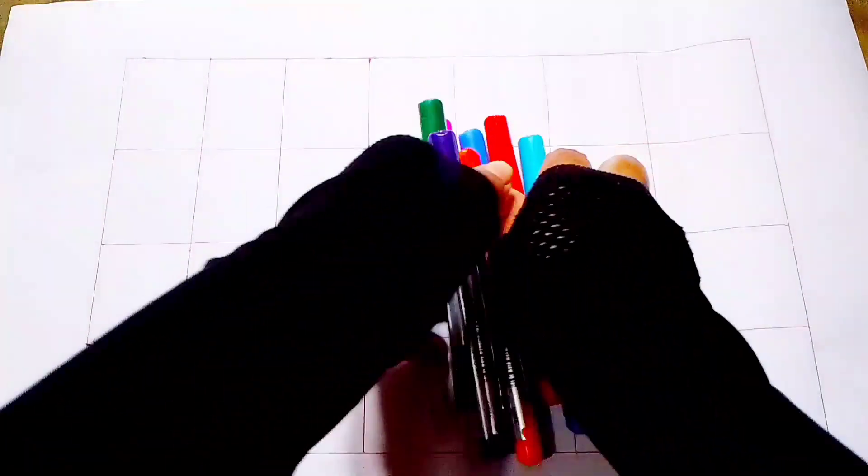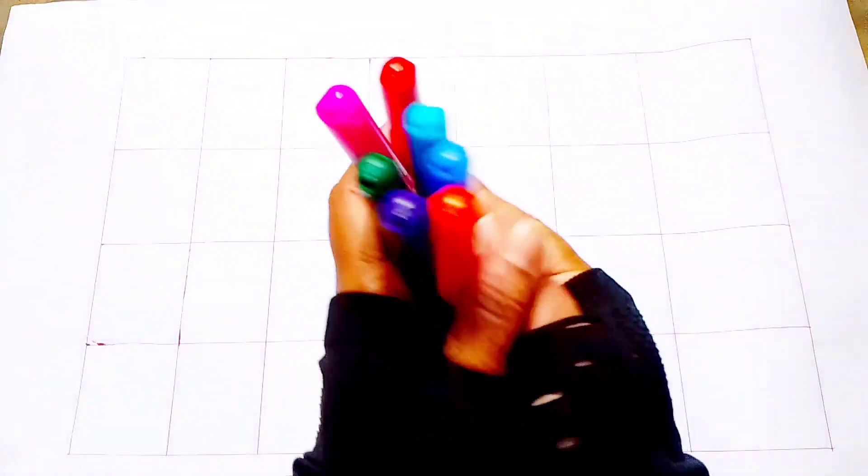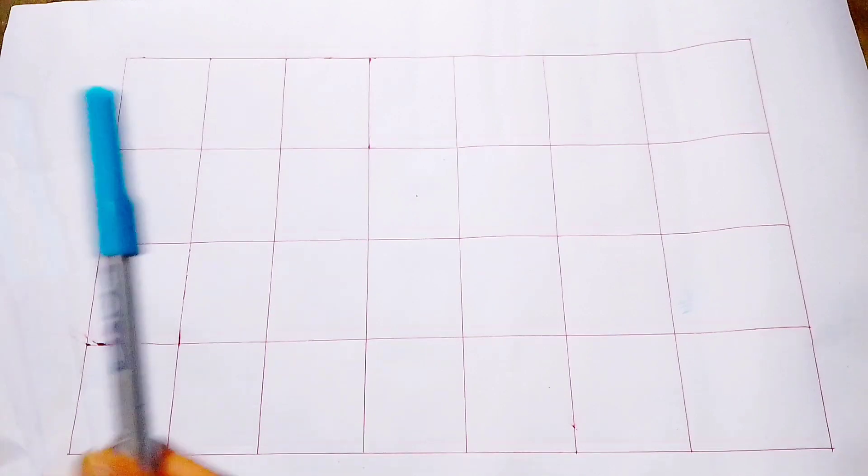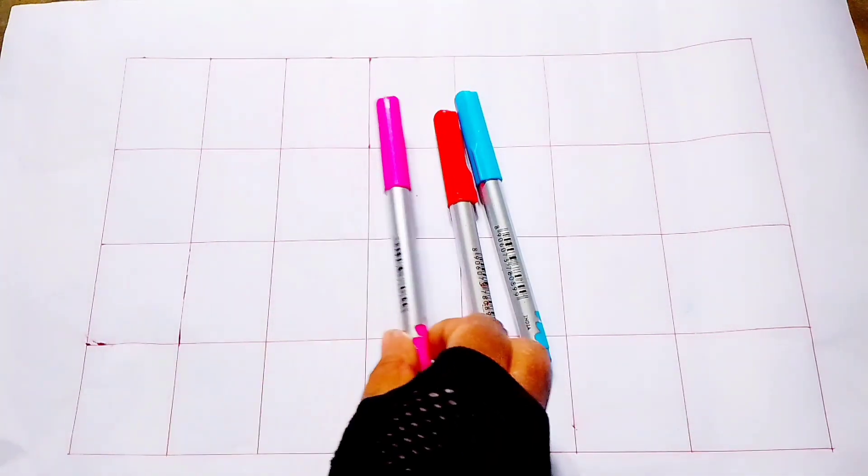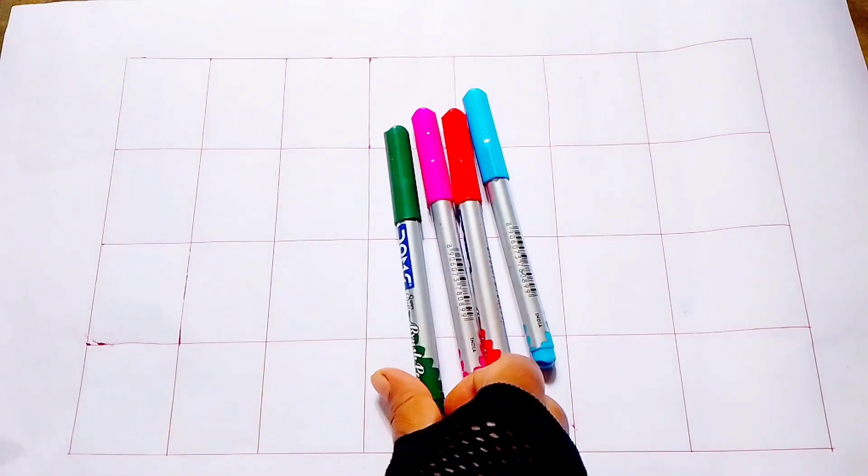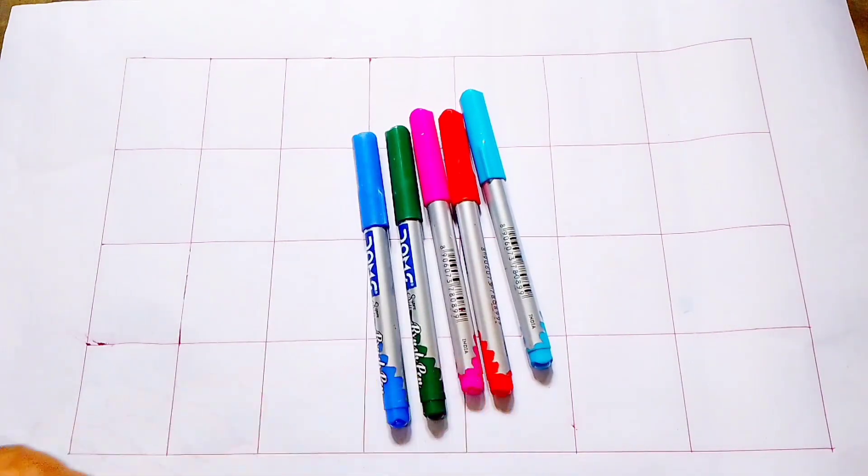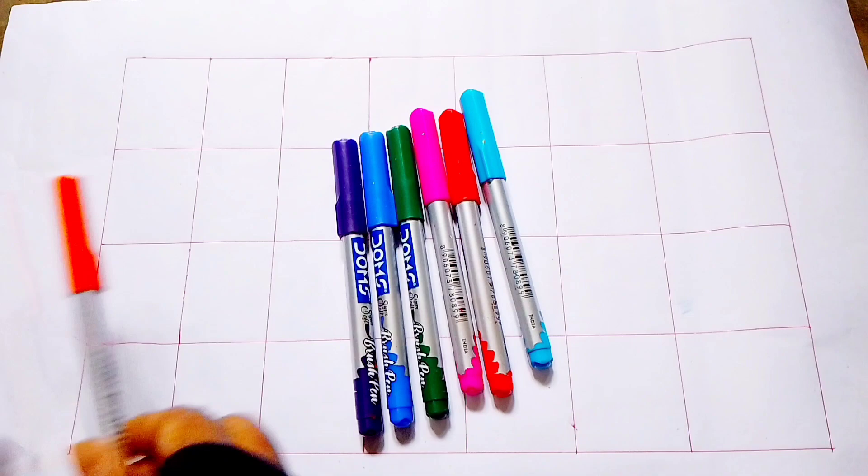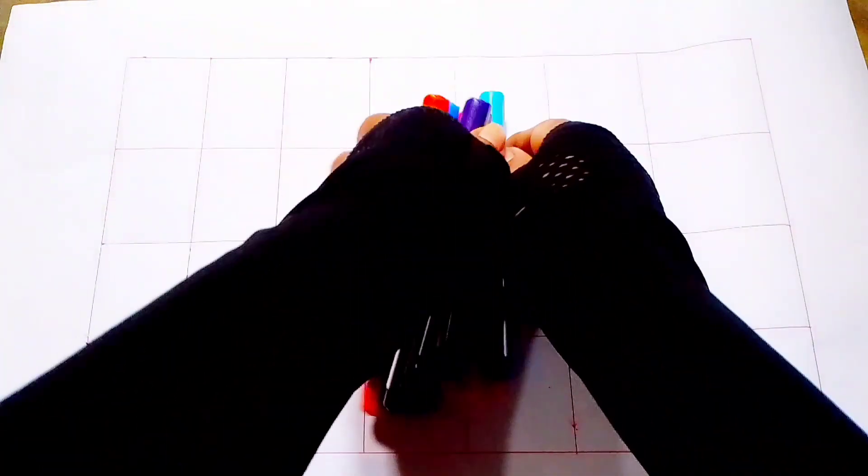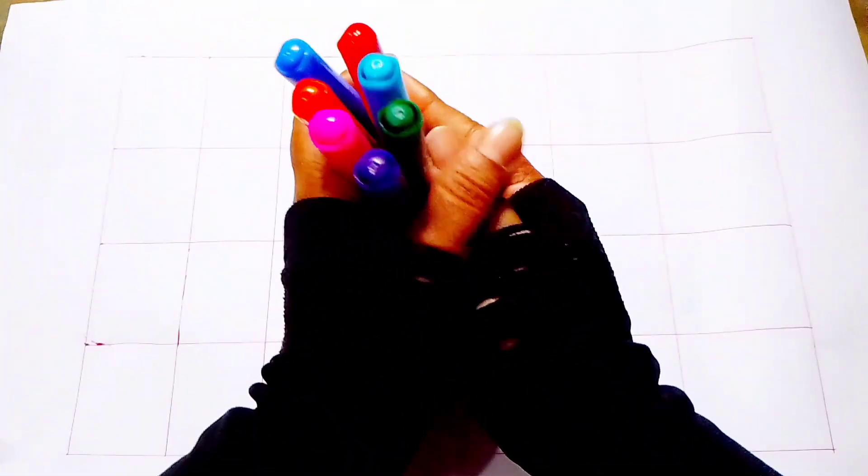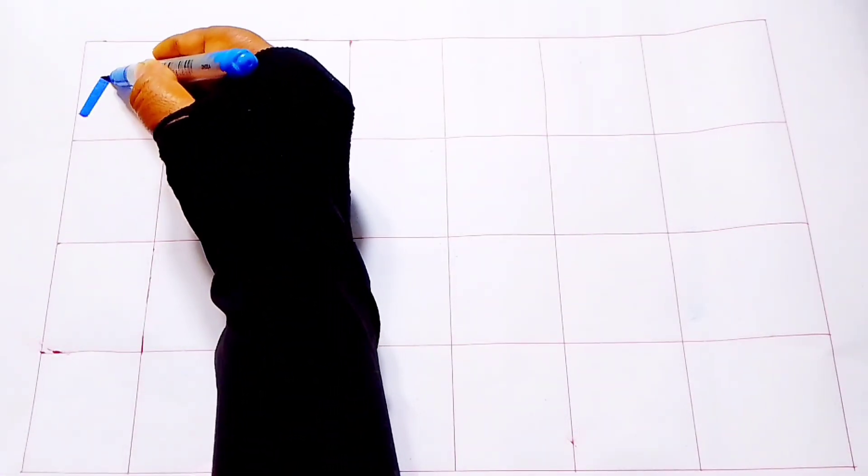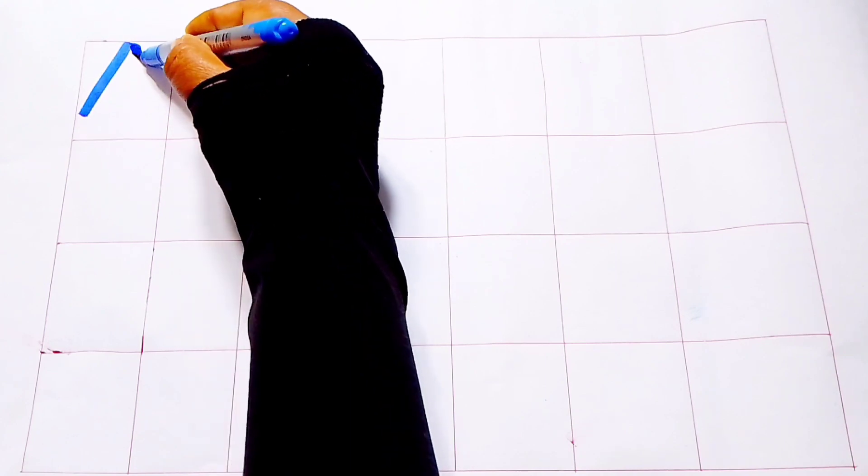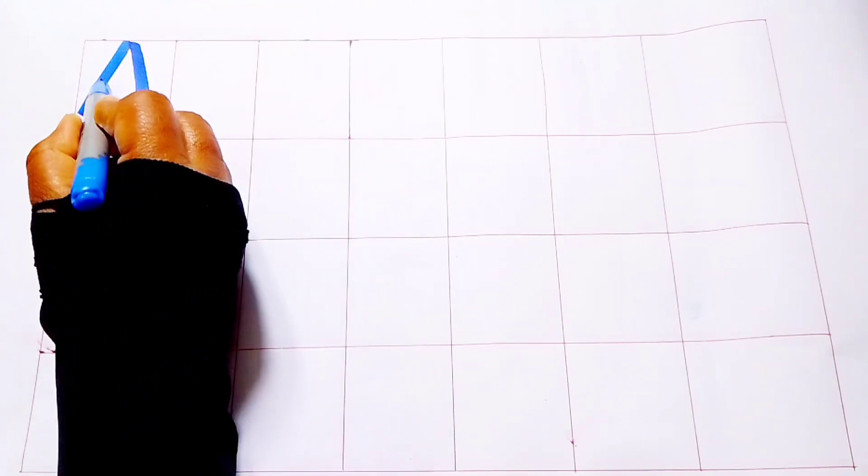Hello, welcome to our channel. Today we are learning alphabets. Sky blue color, red color, pink color, green color, blue color, purple color, orange color. Letter A to Z. This is blue color. A, A for apple, A for airplane.